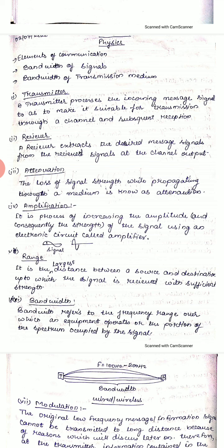Range refers to the maximum distance between the source and destination up to which a signal is received with sufficient strength — that is, without significant loss. For example, the visible range of your eyes is more than 25 meters; that is the visible range.